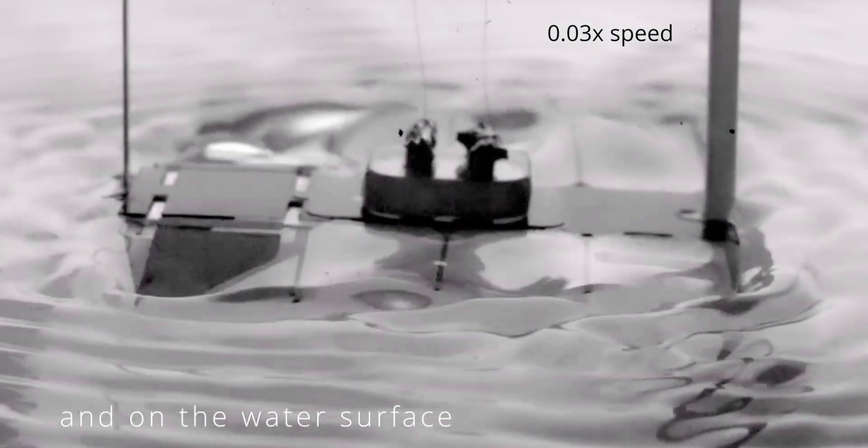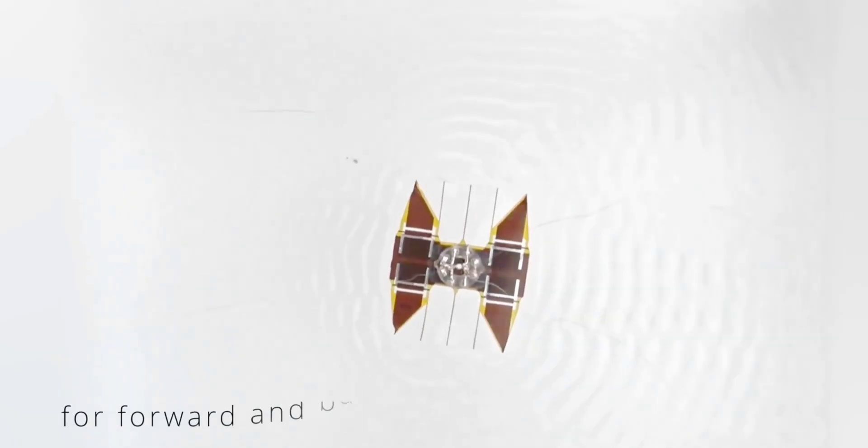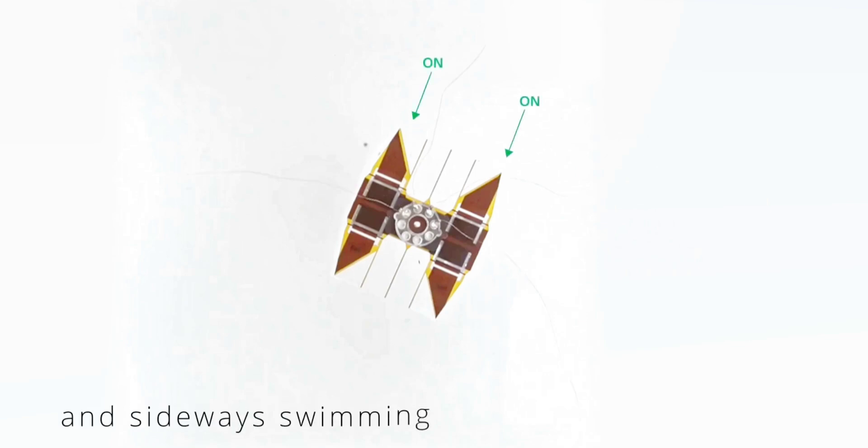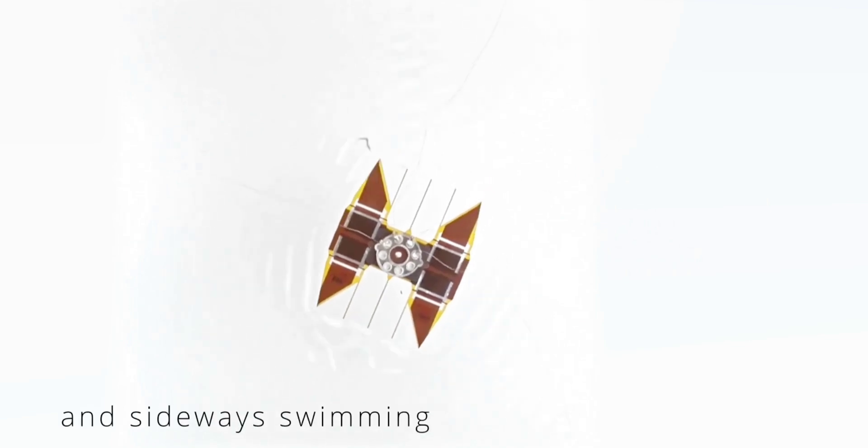Its propulsion system incorporates two soft, flexible, six millimeter thick rubber membranes which serve as pectoral fins. Each of those fins is connected to its own electro-hydraulic actuator, which generates waves that travel through the membrane.